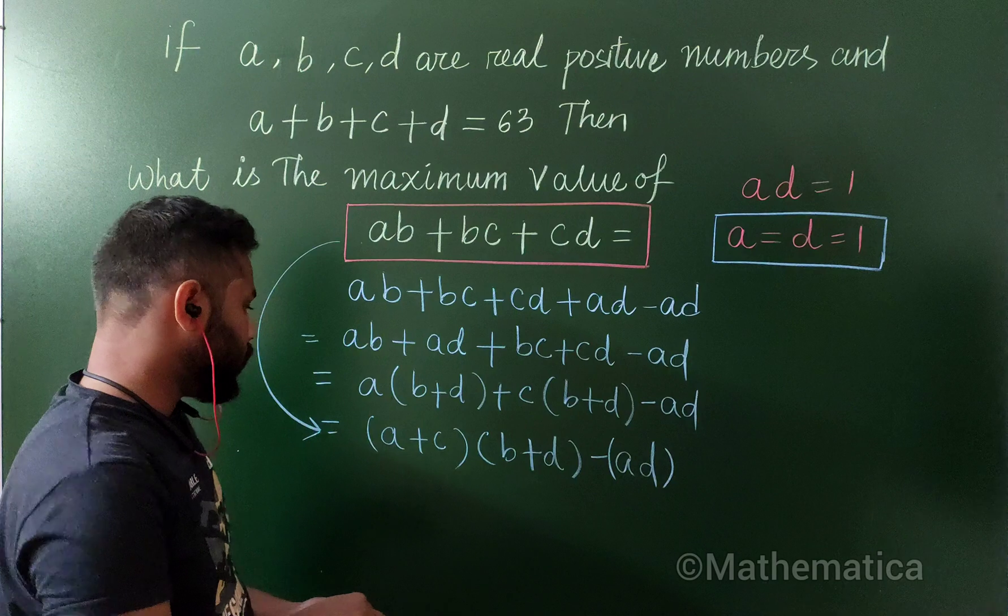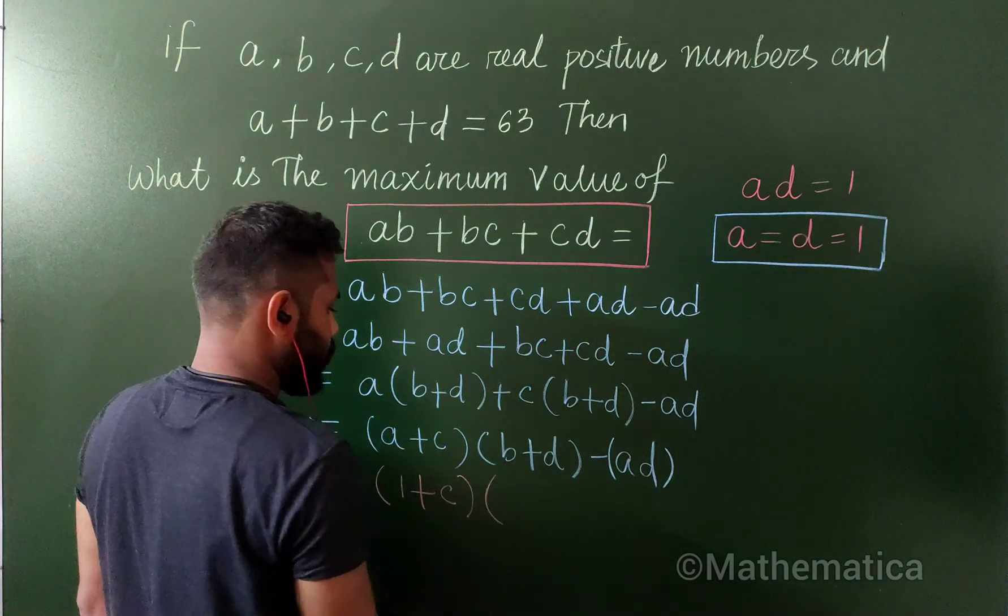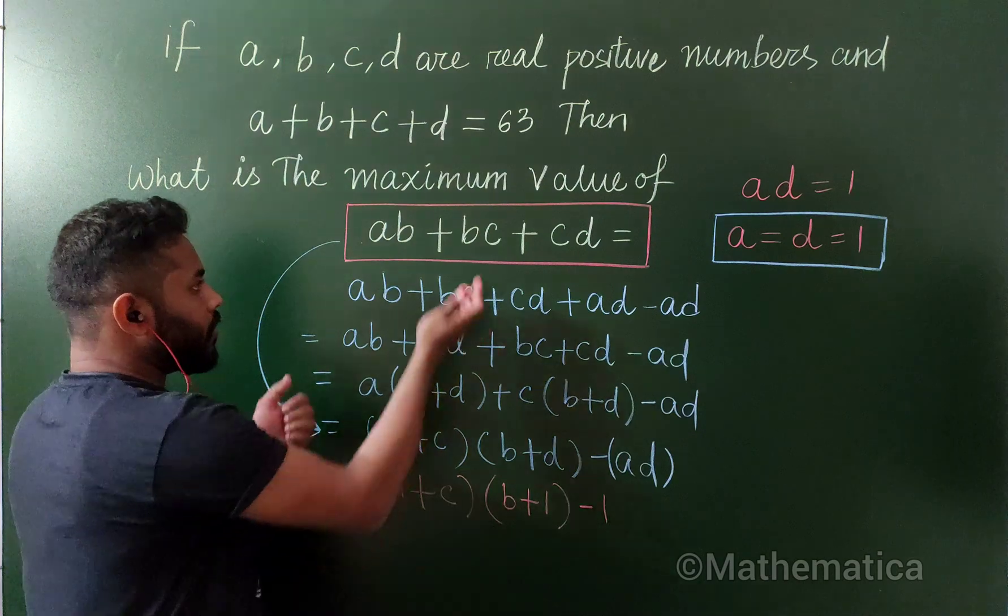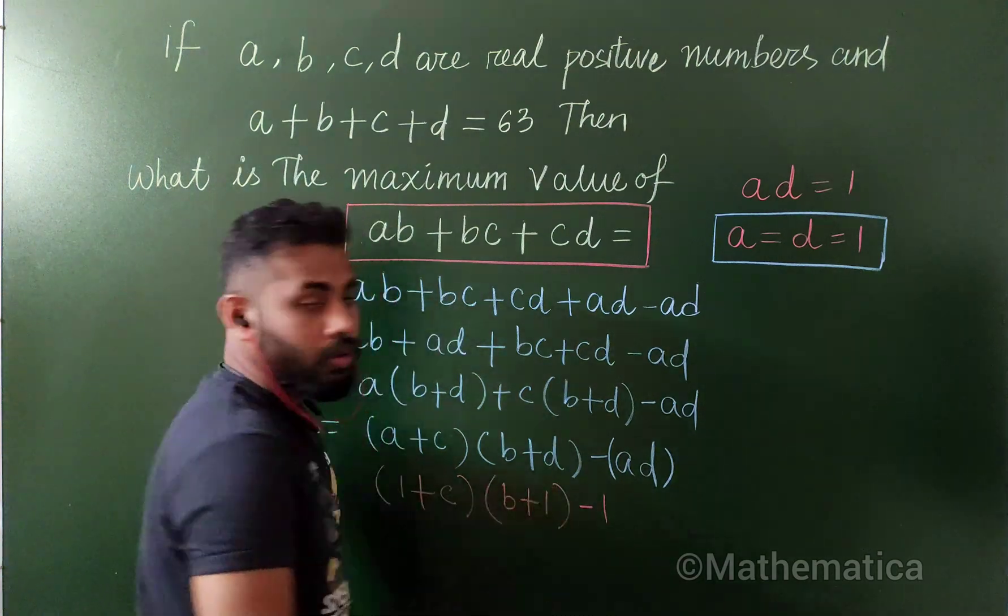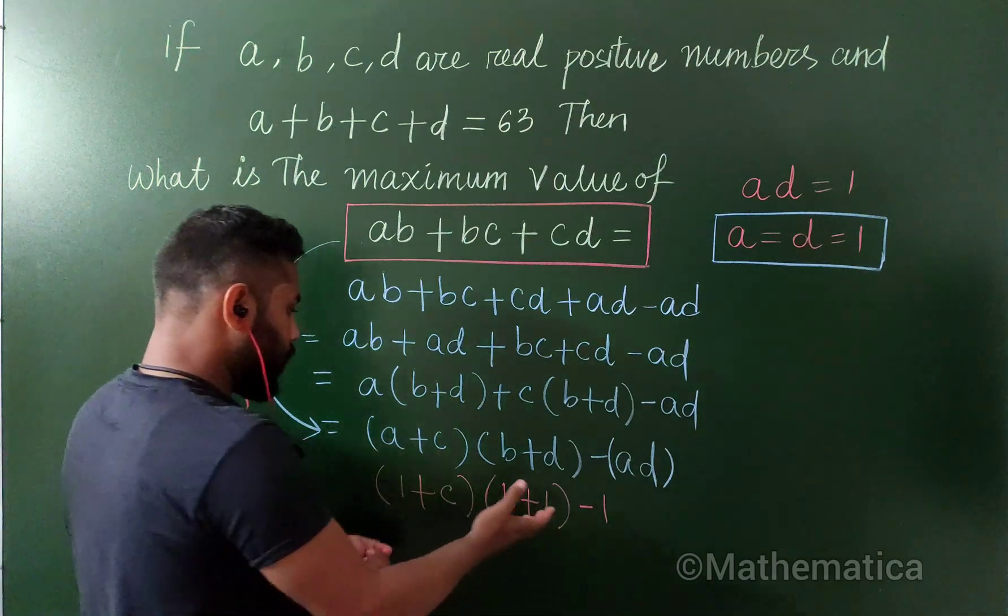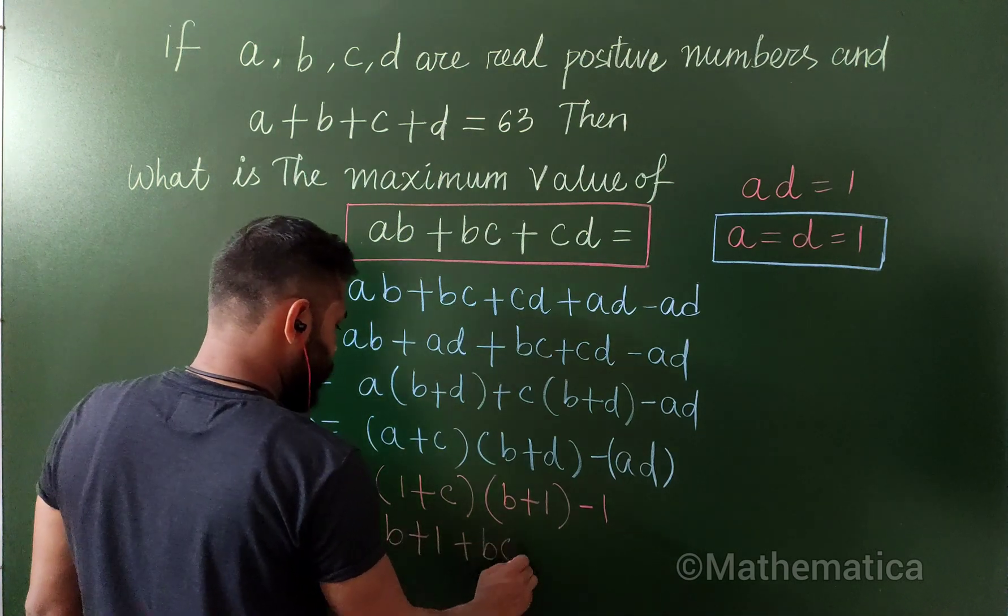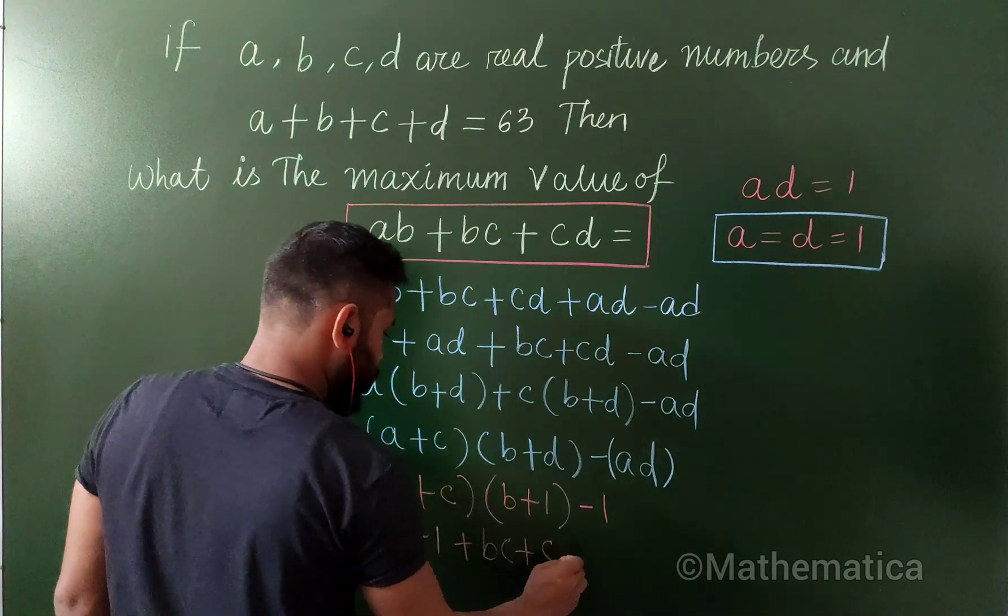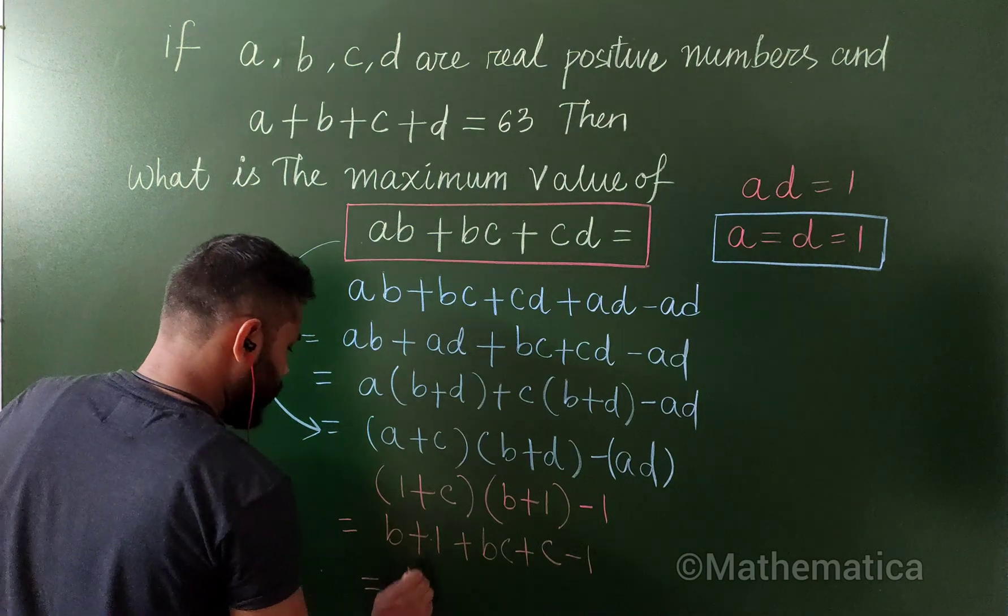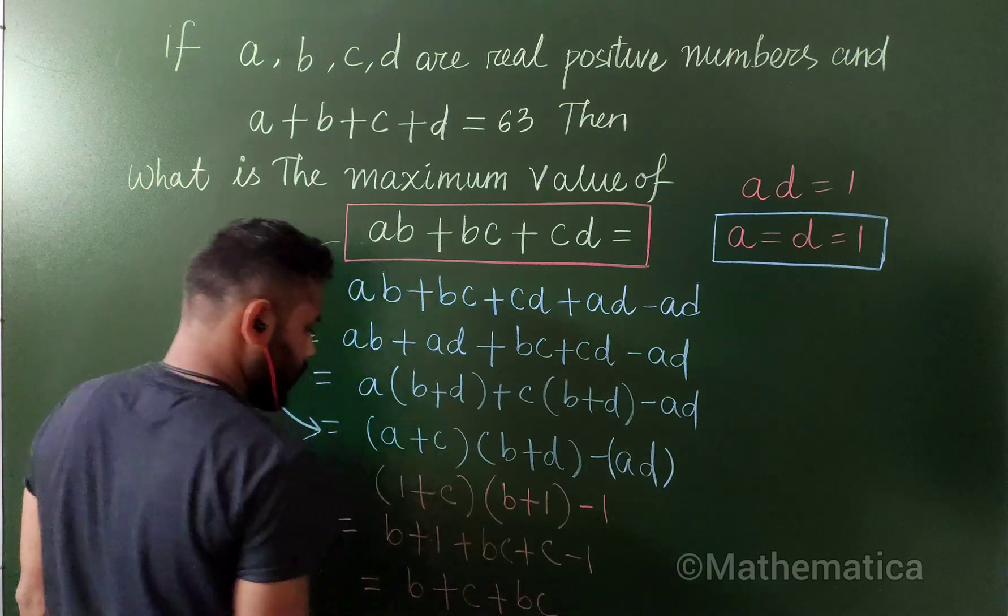So now using one and one here, I am going to get one plus c into this is b plus one minus one. Now from entire four variable equation, we are having now only two variables, which is even more easy. So now if you simplify this little bit, what we are going to get here: b plus one plus bc plus c minus one. And one and one cancel each other, we will have only b plus c plus bc.